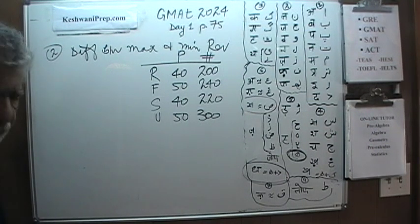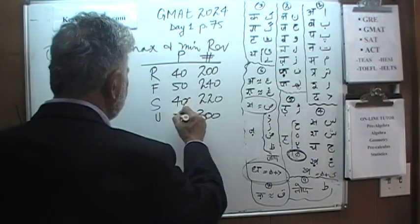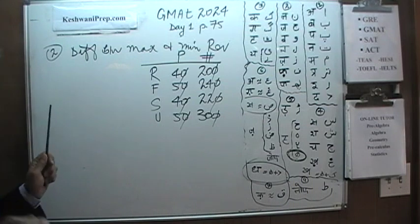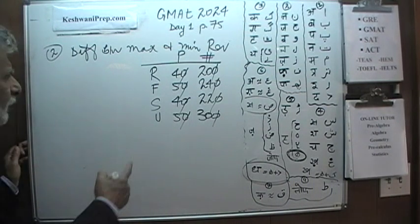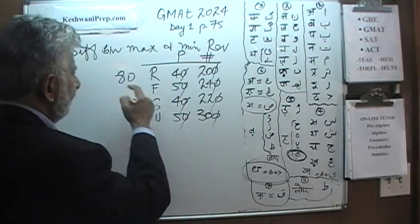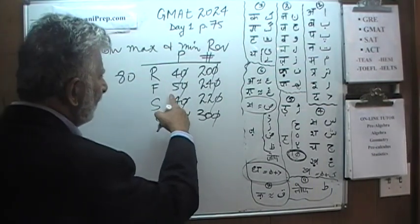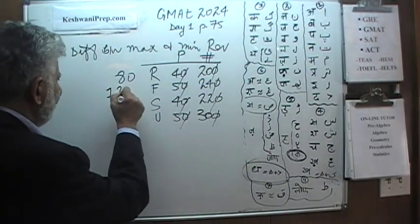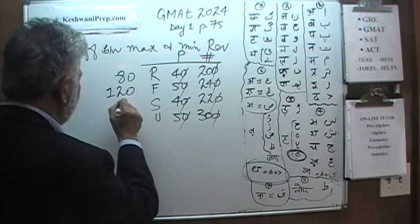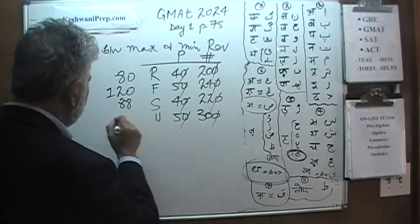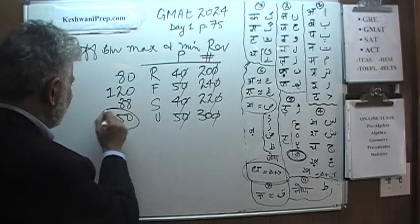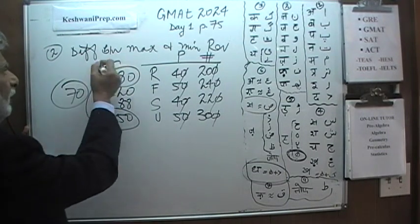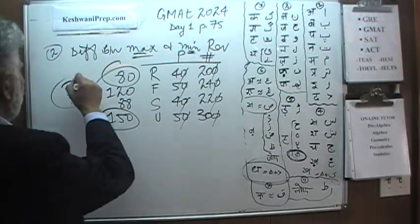First, let's get rid of the extra zeros — we'll reinsert them at the end. 4 times 20 is 80. 5 times 24: 10 times 24 is 240, so 5 times 24 is 120. 4 times 22 is 88. 5 times 30 is 150. So 150 seems like the highest revenue and 80 is the lowest. The difference between maximum and minimum revenue is 70 — meaning $7,000,000 once we reinsert the zeros.